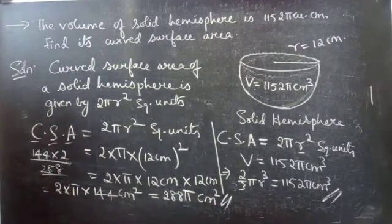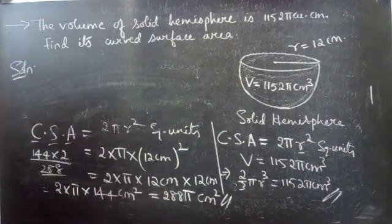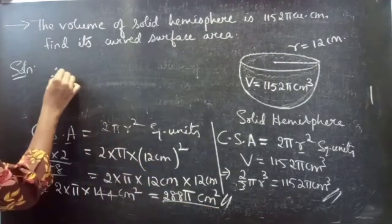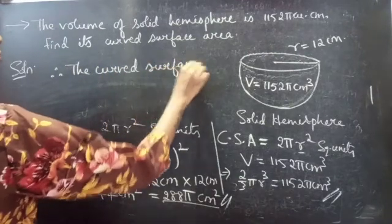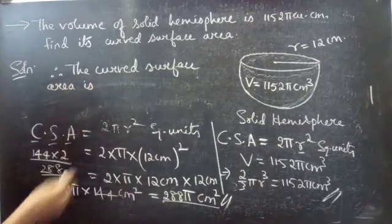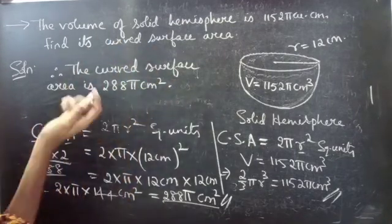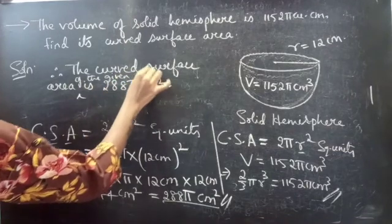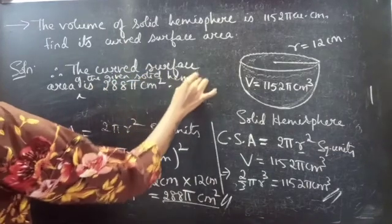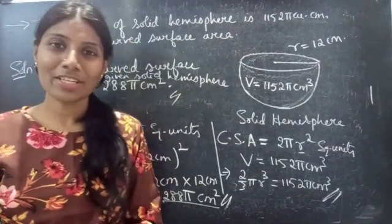So we are asked to find the curved surface area. Therefore the curved surface area of the given solid hemisphere is 288π centimeter square. Hope you will understand. We'll see you in the next video — until then, bye bye.